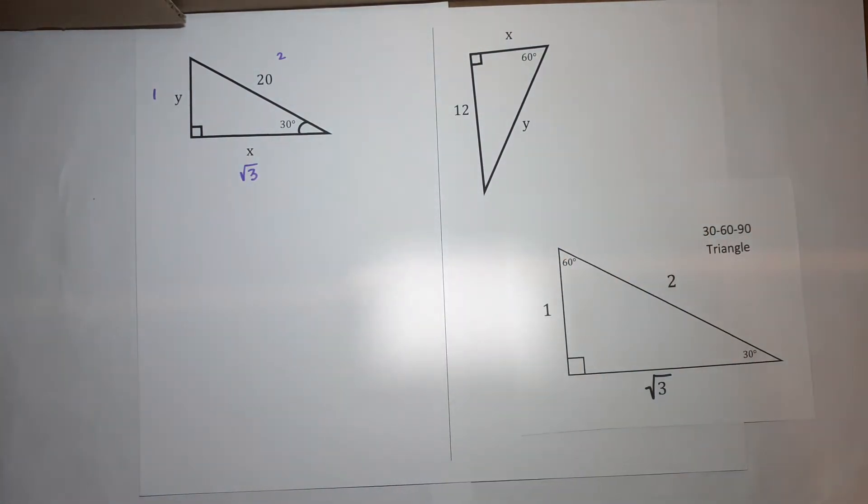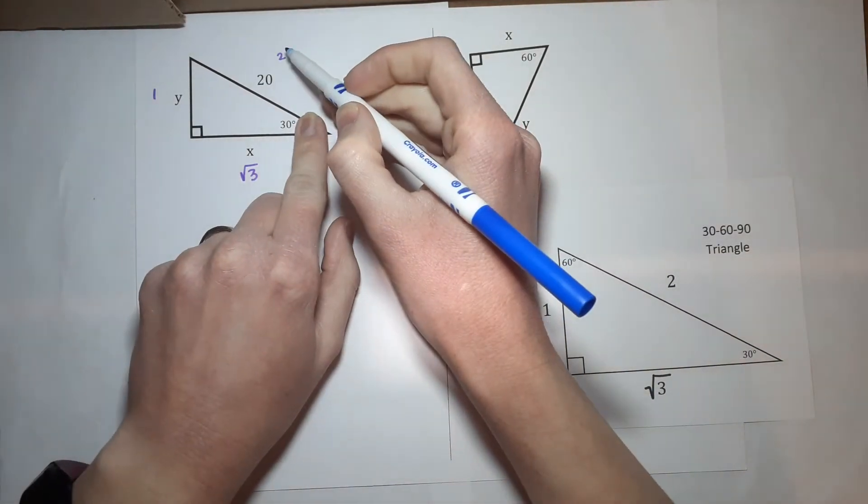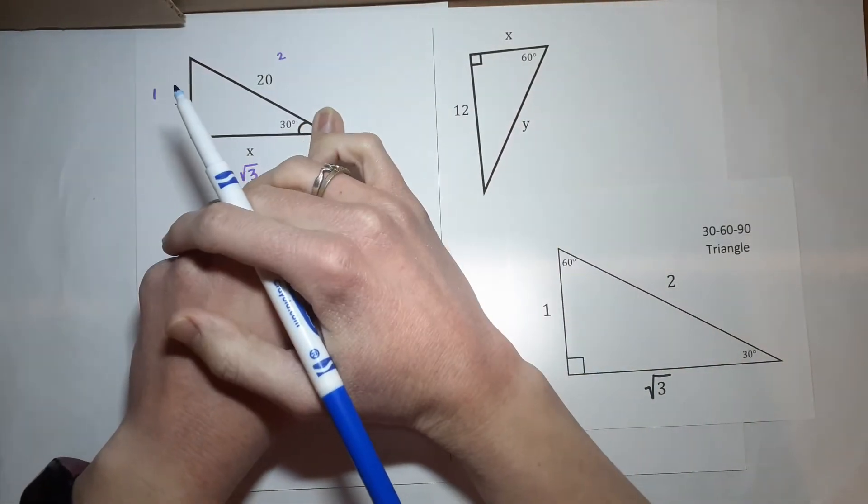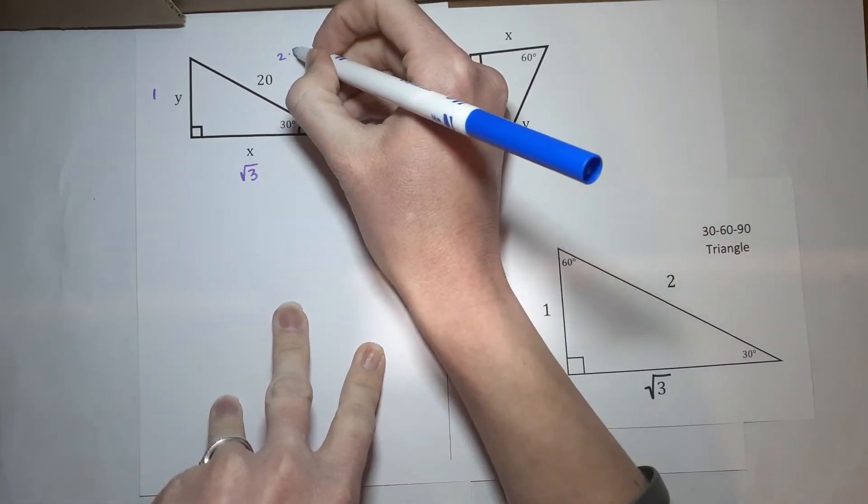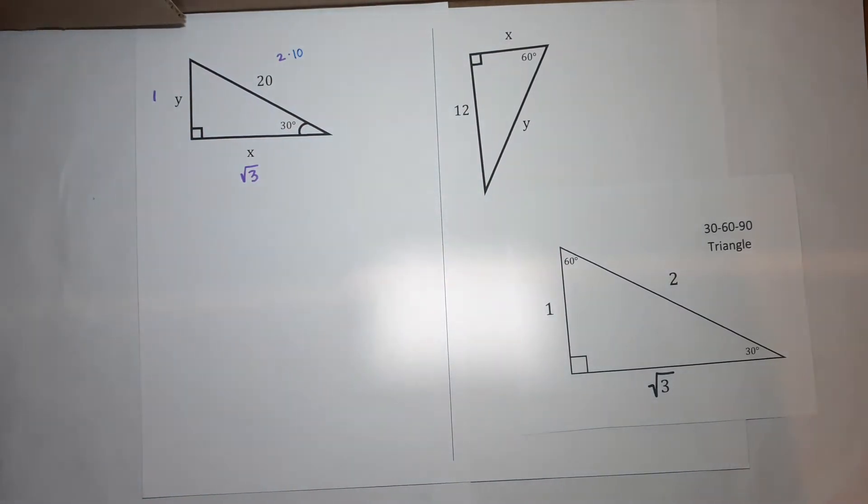What happened? The number that we know is 20. So, what happened to this 2 to get it to 20? Well, it was multiplied by 10, right? 2 times 10 gives me 20.